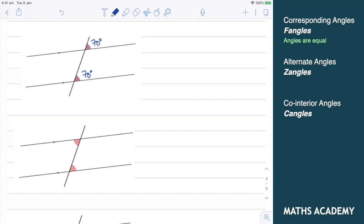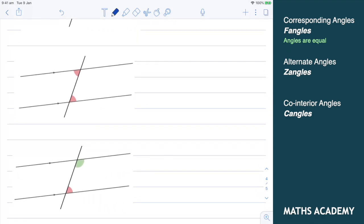Looking at the next image, I have alternate angles, and here I have my letter z. There it is. Now, again, if I know one of those angles, let's say that this one here is 60 degrees, then the other angle over here, the alternate angle, is also 60 degrees. Those angles are equal.